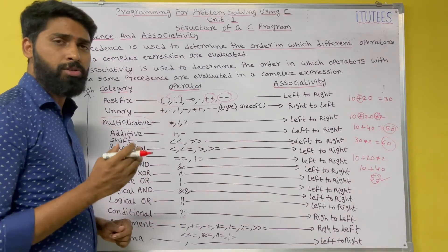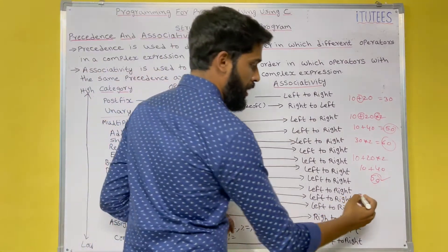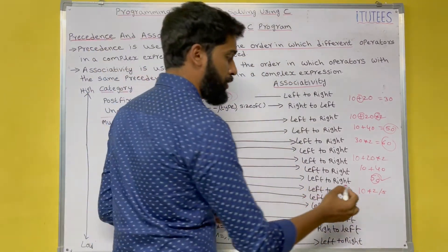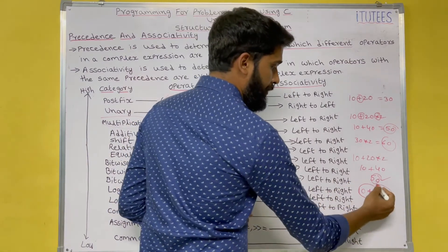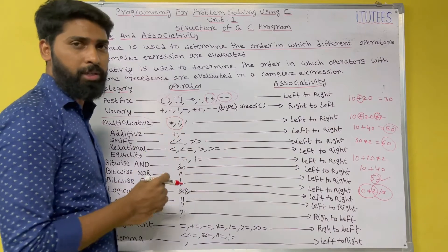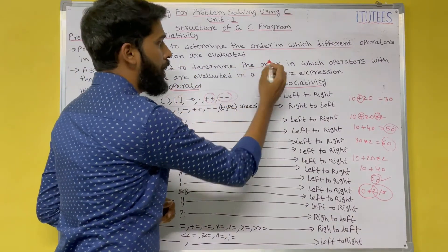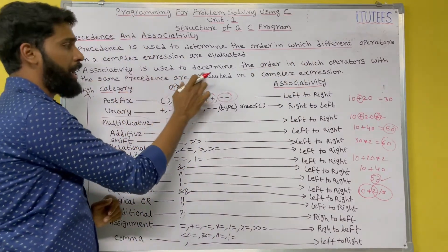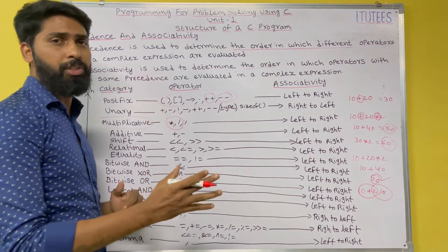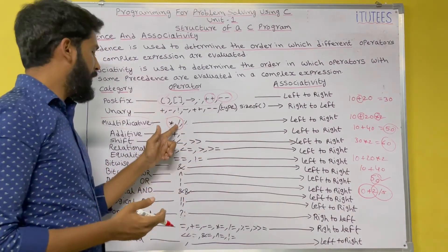Now another question: 10 asterisk 2 by 5. What is the answer? First, do you evaluate 10 into 2 or 2 by 5? Based on precedence, these two operators belong to the same group — both have the same precedence. So now you follow associativity. Associativity is used to determine the order in which operators with the same precedence are evaluated in a complex expression.